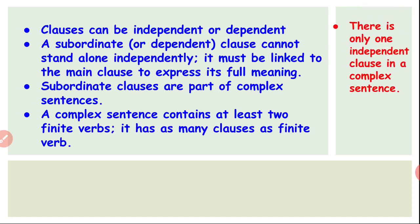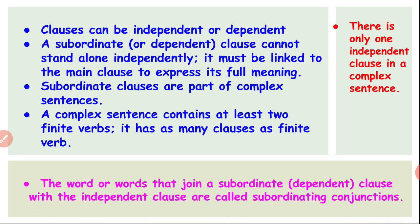Now, there is only one independent clause in a complex sentence — no matter how long the complex sentence is, it will have only one independent clause. Keep this in mind. The word or words that join a subordinate clause with an independent clause are called subordinating conjunctions, which we discussed in the previous video. I would like you to comment in the comment box which subordinating conjunctions you know.